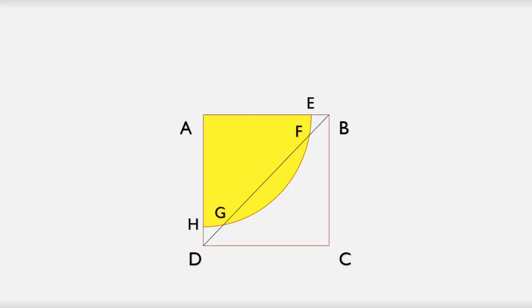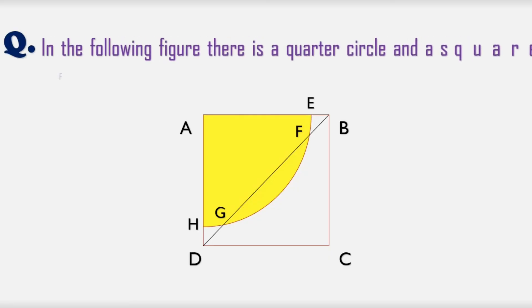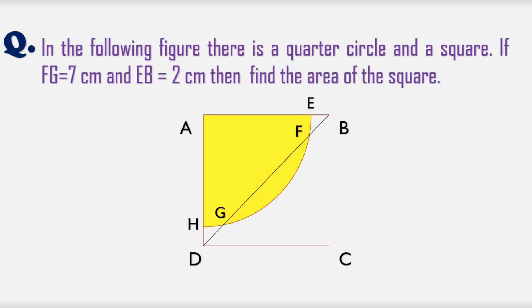Let's move toward another question. In the following figure there is a quarter circle and a square. If FG is equal to 7 cm and EB is equal to 2 cm then find the area of the square.